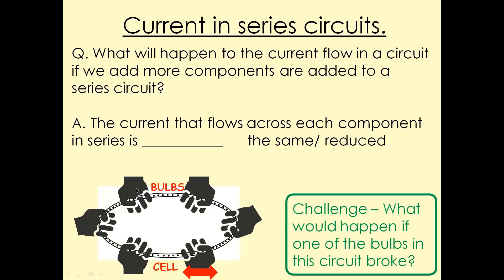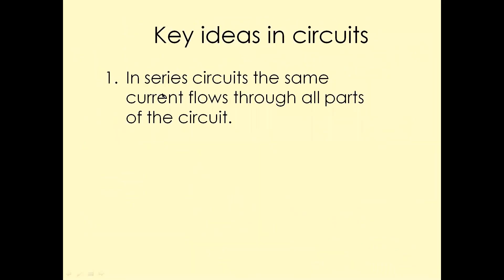If the voltage in the circuit is six volts and there are six components all the same, each component will get one volt each. The current remains the same — five amps — so every single component gets the same current. But the voltage is shared, so the six volts in the whole circuit means each component gets one volt. That's the key idea to write down.